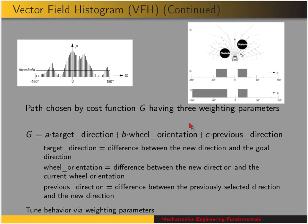You can tune the behavior via the weighting parameters A, B, and C. For example, if we make A much higher than B or C, that would give us behavior that is aggressive towards the goal — meaning the cost of any direction that's far from the goal direction would be high, so we'd be less likely to choose paths that take us away from the goal direction. These methods for obstacle avoidance can be implemented using the exteroceptive sensors on the robot.